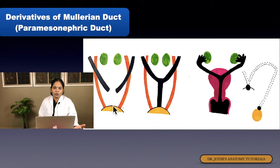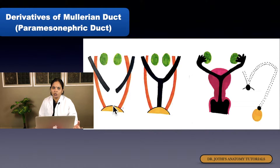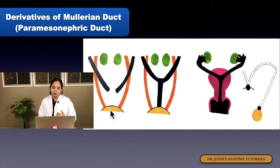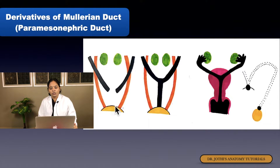In our excretory system, we have the endodermal cloaca, which is the post-allantoic part of the hindgut. The endodermal cloaca is divided into two portions by the urorectal septum. It is divided ventrally as the urogenital sinus and dorsally as the primitive rectum. Both the mesonephric duct and the paramesonephric duct open into this urogenital sinus.